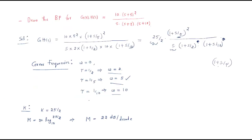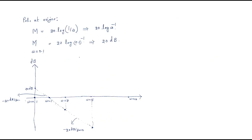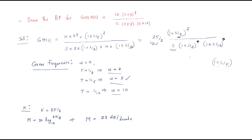At ω = 5 we have two zeros. Two zeros means +20 + 20 = +40 dB is added to the slope. So from ω = 5 to ω = 10, the slope changes by +40 dB/decade. After ω = 10, we have one pole, so −20 dB is added again.